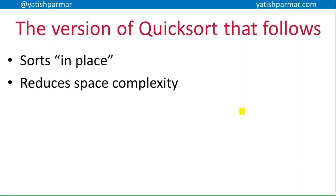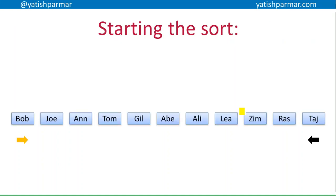This version of quick sort sorts in place — that means if I have an array or list I'm just literally working on that data structure. I'm not generating new data structures every time I make a recursive call. By reducing the space complexity, I'm increasing the efficiency of the algorithm.